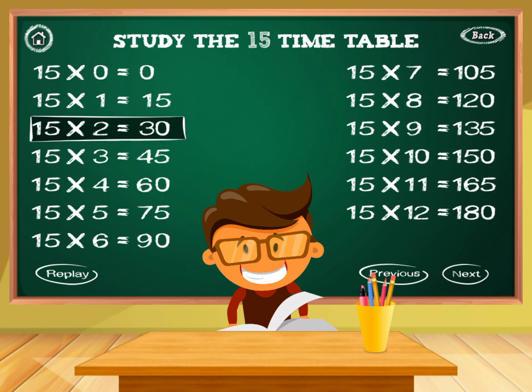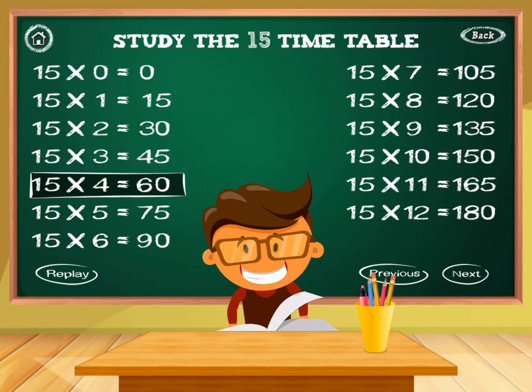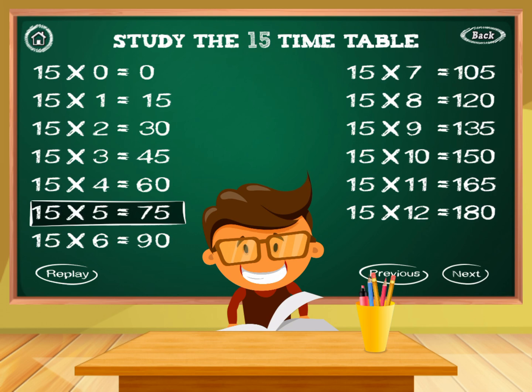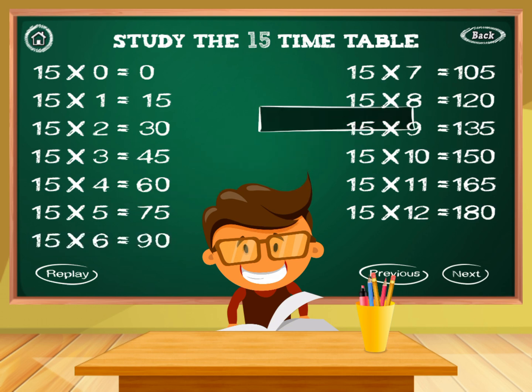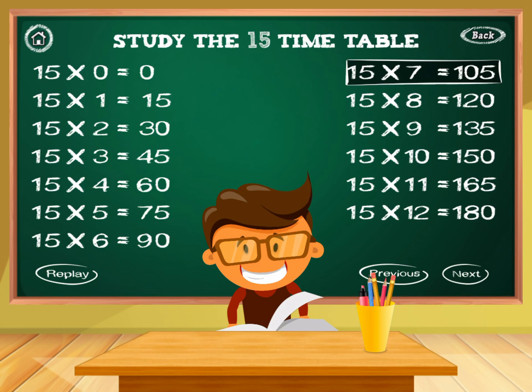15 times 2 equals 30. 15 times 3 equals 45. 15 times 4 equals 60. 15 times 5 equals 75. 15 times 6 equals 90. 15 times 7 equals 105.